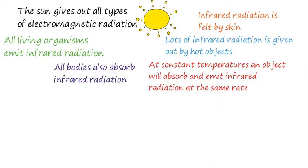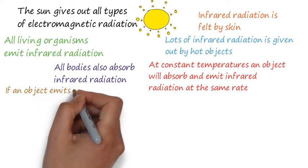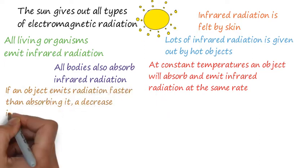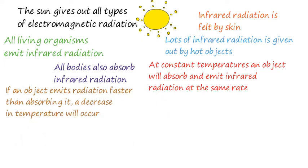If a body is at a constant temperature, it will absorb and emit infrared radiation at the same rate. If an object emits radiation faster than absorbing it, its temperature decreases and vice versa.